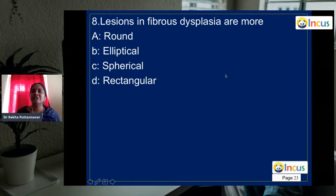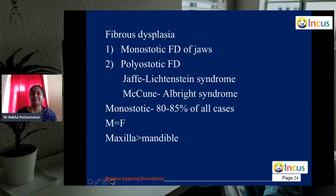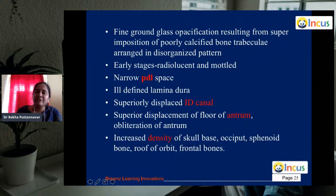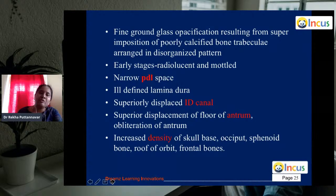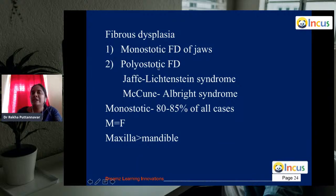Question 8: fibrous dysplasia. Lesions are usually elliptical in shape initially, but in later stages the boundary blends with normal bone, with no distinct borders. There are two types: monostotic (one bone) and polyostotic (multiple bones). Under polyostotic, we have Jaffe-Lichtenstein syndrome and McCune-Albright syndrome. For head and neck, monostotic fibrous dysplasia accounts for about 80–85% of cases, and both genders are equally affected.